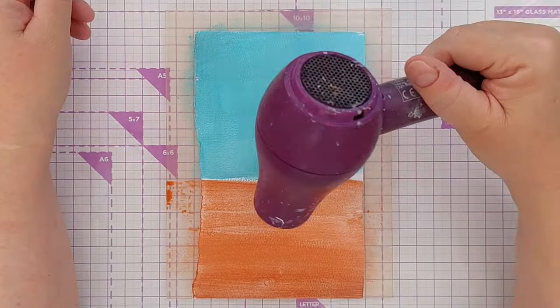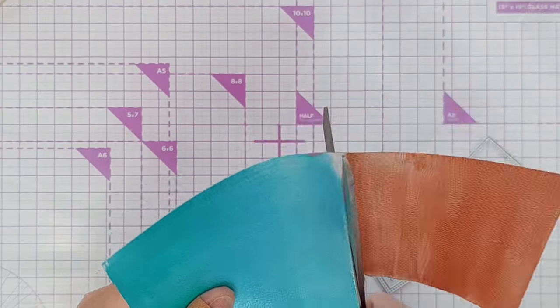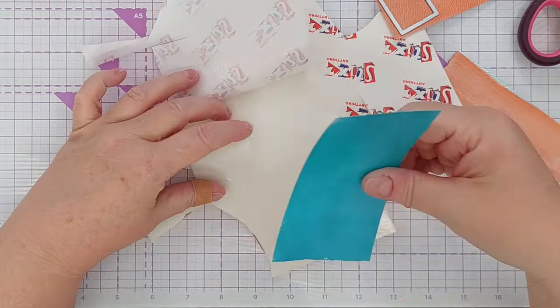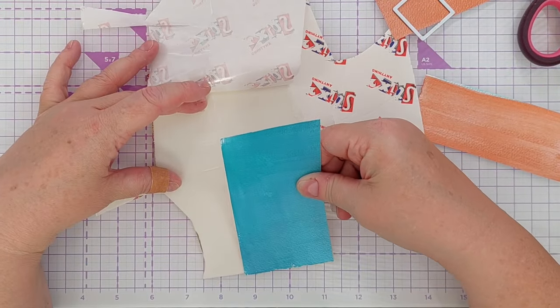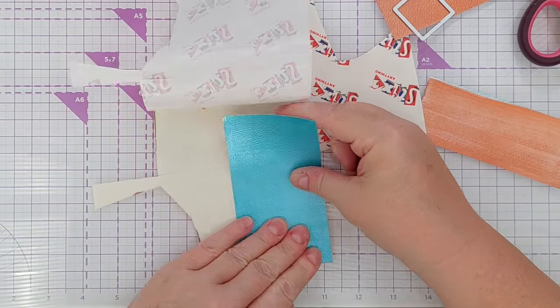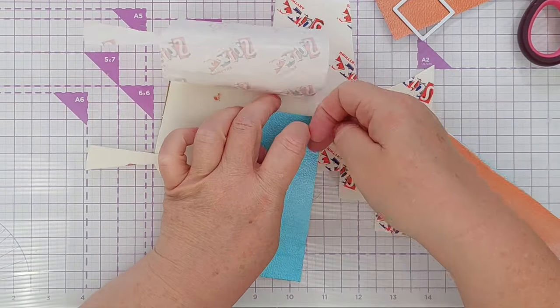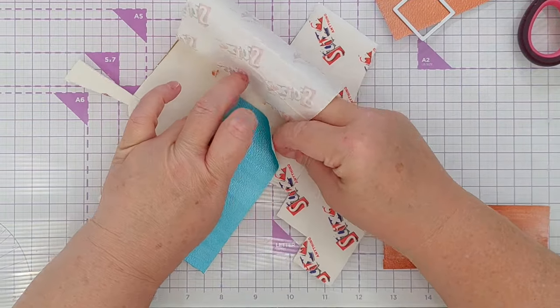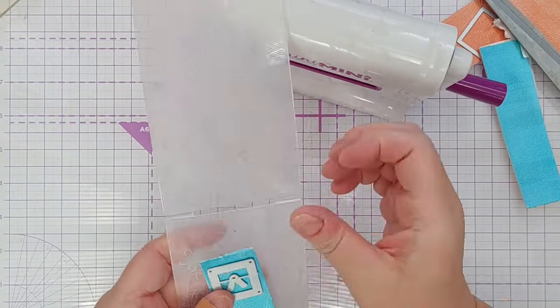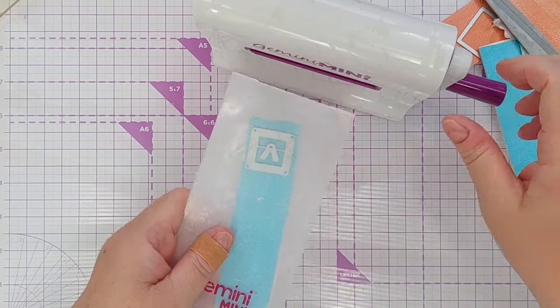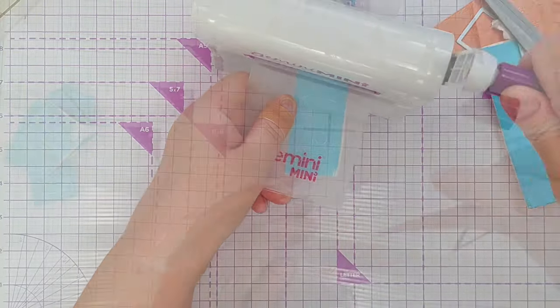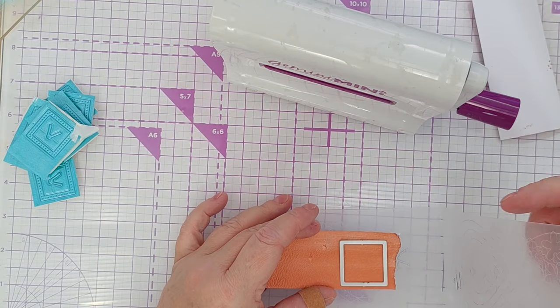I did stick some of the teal card down to some double-sided adhesive craft foam. It's quite thin but it does give a nice bit of dimension. From the teal card I cut some small square stitched frames and from the copper paper I cut some slightly larger stitched square pieces and then I stuck the dimensional teal frames on top of the flat copper squares.